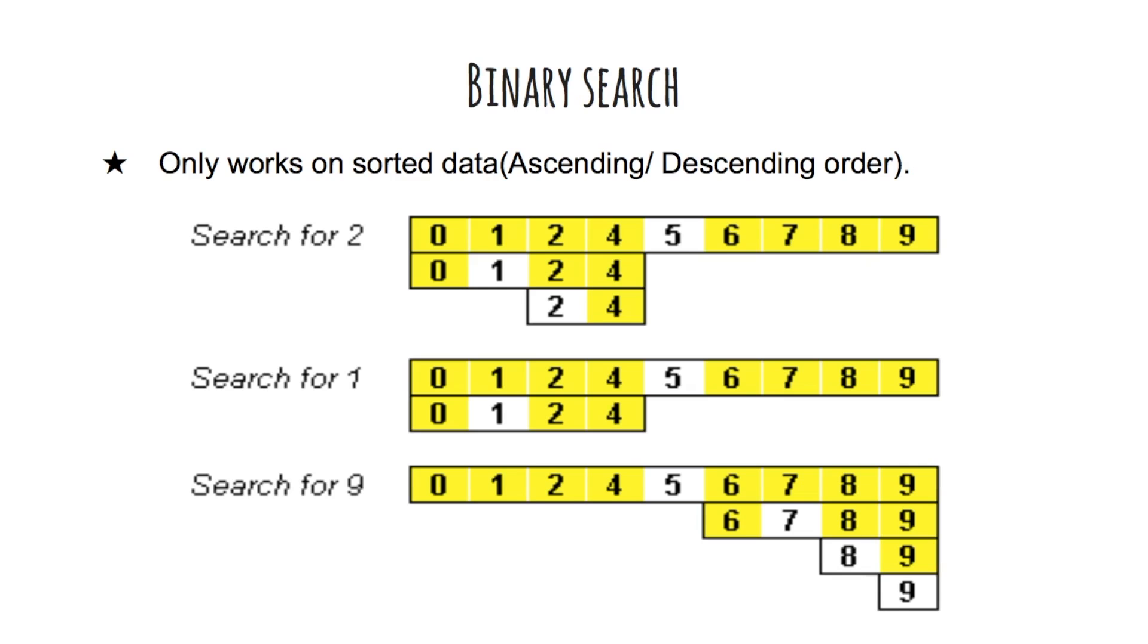In binary search we compare the middle element of the array with the value. If the value matches the middle element, its position in the array is returned. If the value is less or more than the middle element, the search continues in the lower or upper half of the array respectively with a new middle element, eliminating the other half from consideration. This process continues on subarrays as well until the size of the subarray reduces to 1.